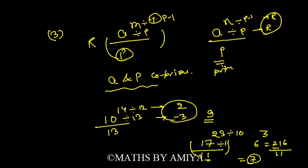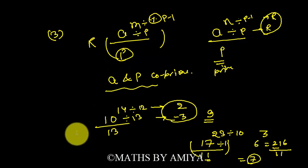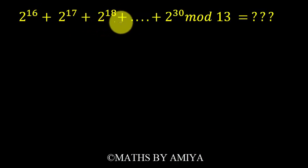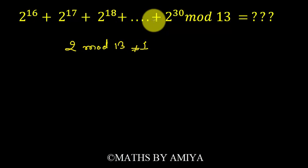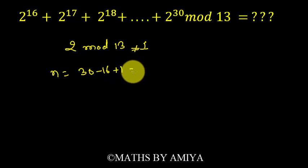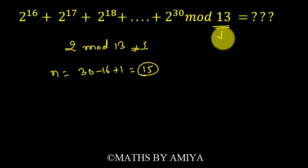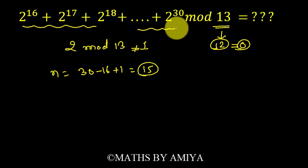So we learned three concepts: one is the sum of consecutive powers; second is how to find total number of terms — last term minus first term plus one; third is a^m divided by a prime. Now solve the first question: 2^16 + 2^17 + 2^18 + ... + 2^30 divided by 13. First check: 2 mod 13 is not 1, so we can apply the concept. Total terms: 30 minus 16 plus 1 = 15. Since we are dividing by 13, we need 12 terms for the remainder to be zero. So we have 3 extra terms.